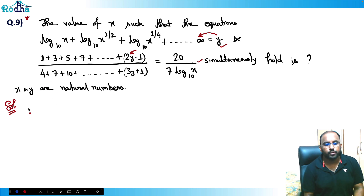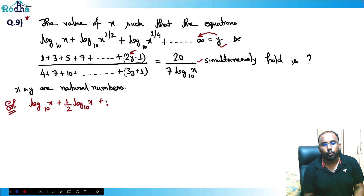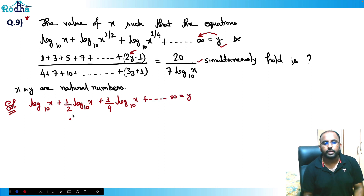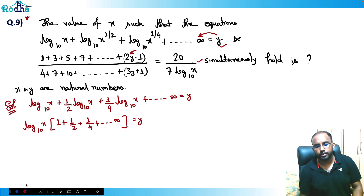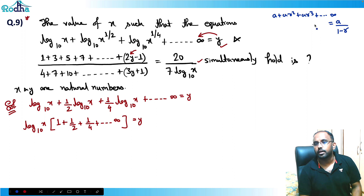In the first equation, we have log x base 10 plus half of log x base 10 plus one-fourth of log x base 10, continuing until infinity, all equal to y. I can take log x base 10 as common, giving 1 + 1/2 + 1/4 + ... till infinity. This is an infinite GP. The formula for infinite GP is: a + ar + ar² + ... = a/(1 - r), where r is the common ratio.